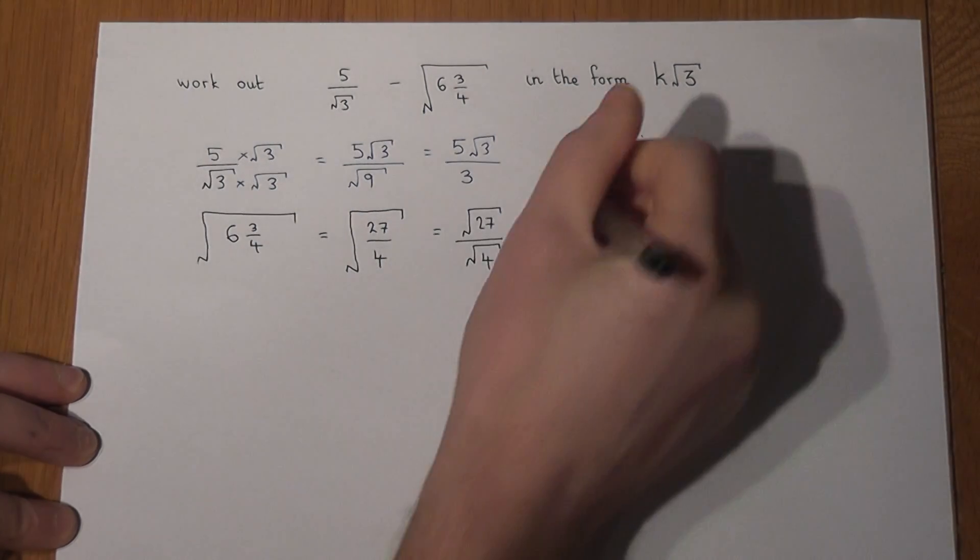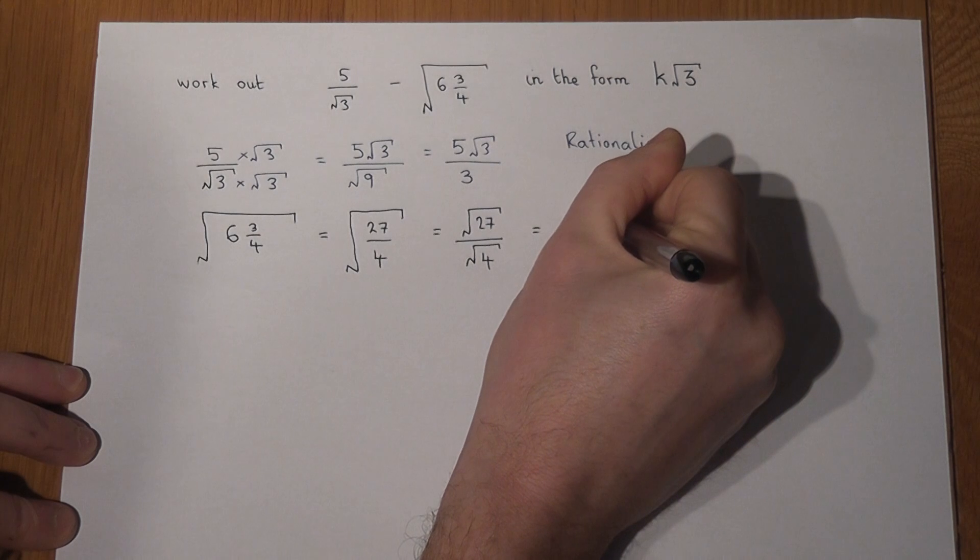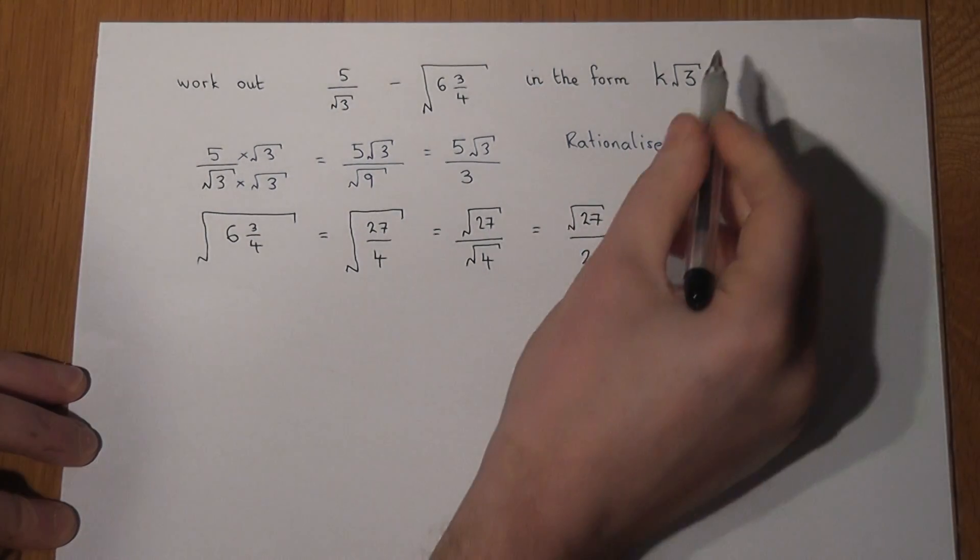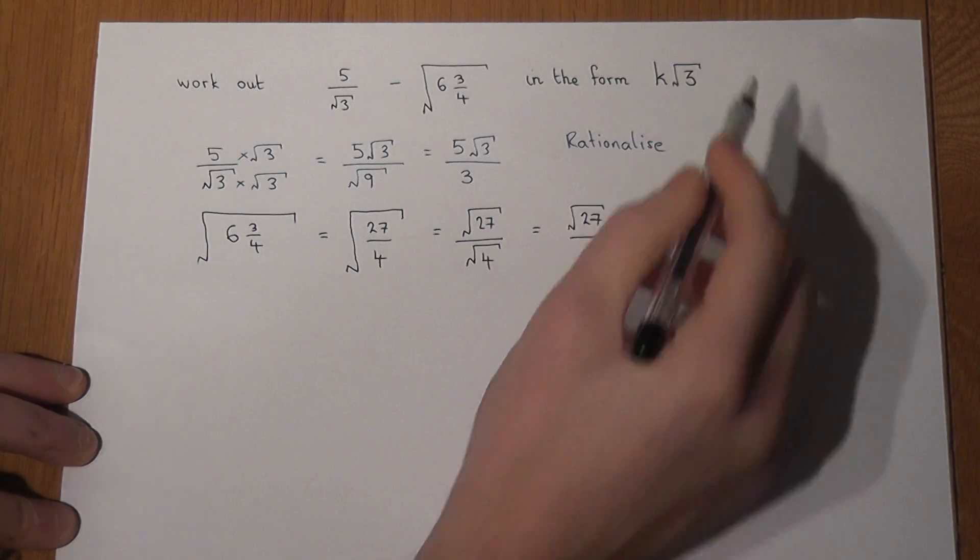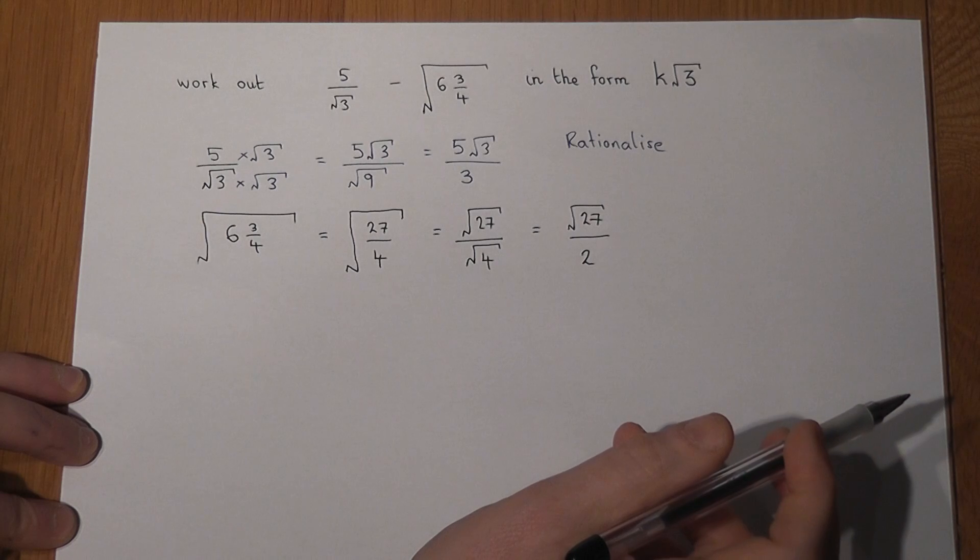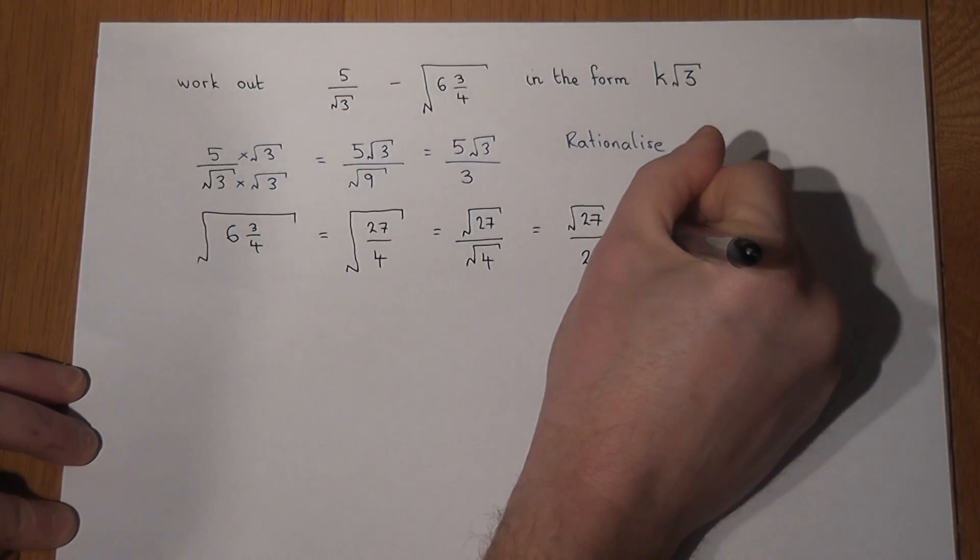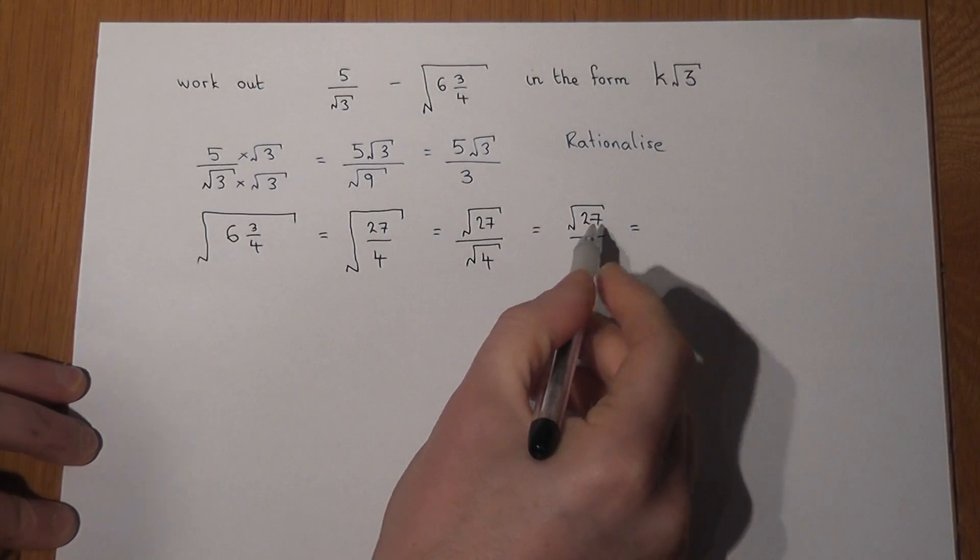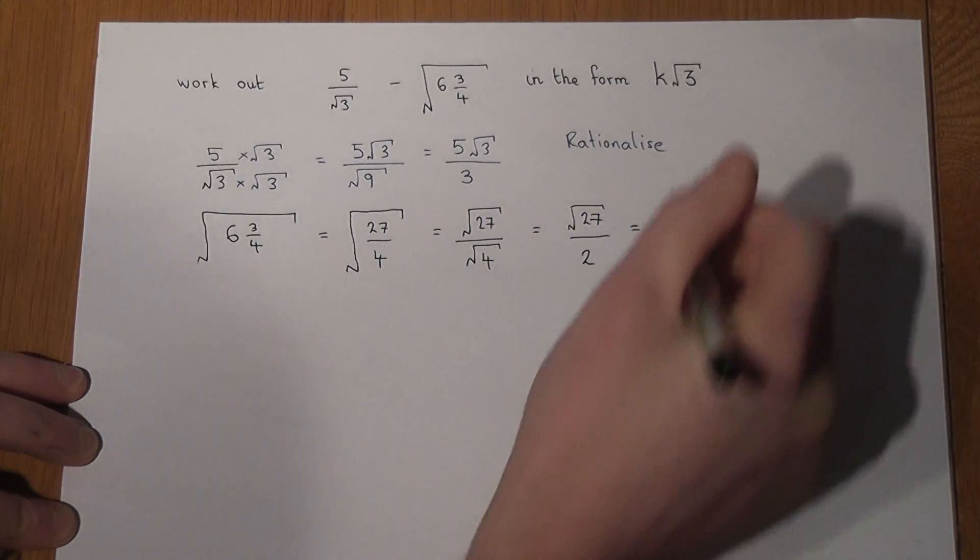Now the root 3 in the question is a bit of a hint because this surd on the top can be simplified. And to simplify a surd we look for the highest possible square factor of the number in the square root.